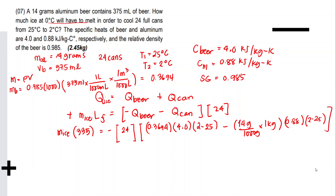The negative signs placed here are just to make the answer positive — since 2 − 25 is negative, and negative times negative is positive. It's not necessary to over-analyze the sign convention here; it's simply to keep the equation positive.